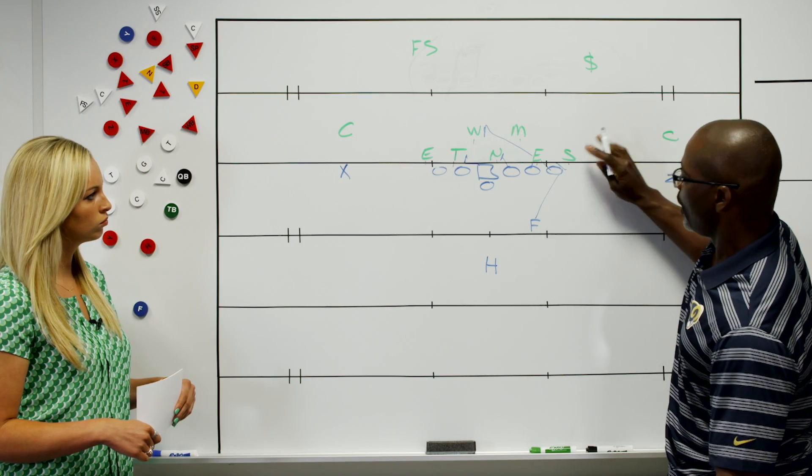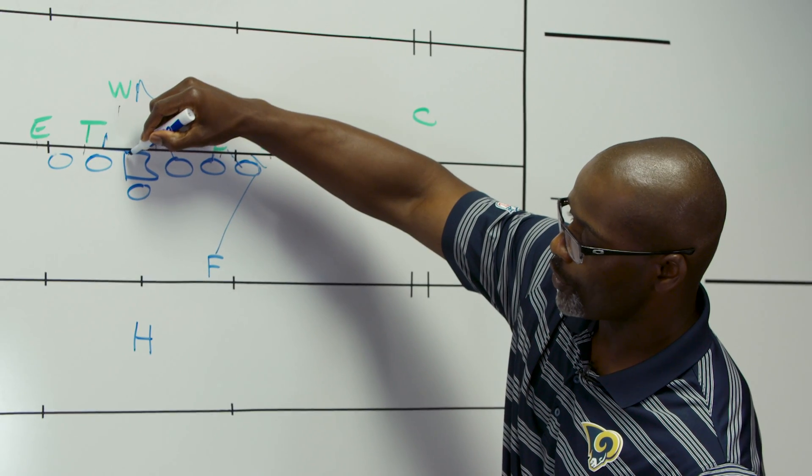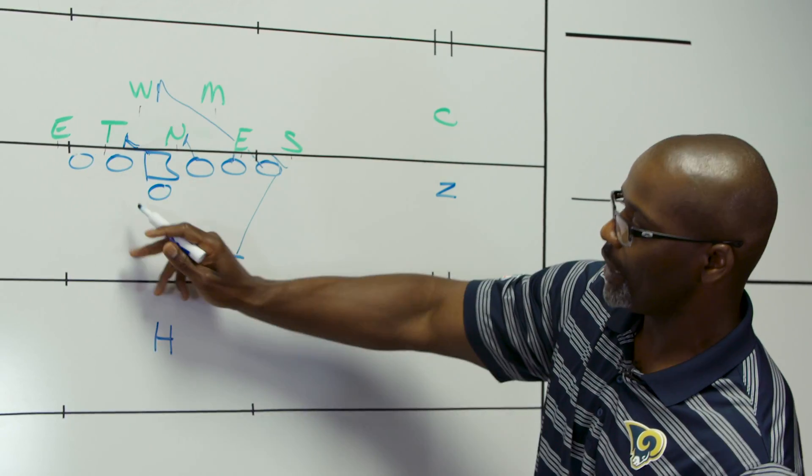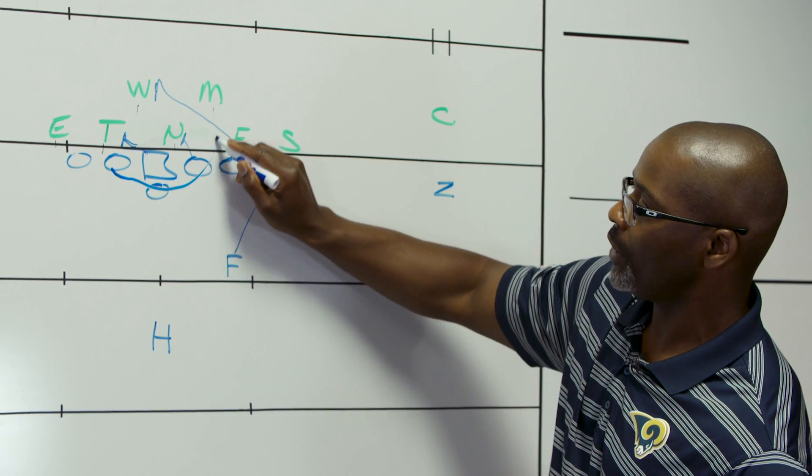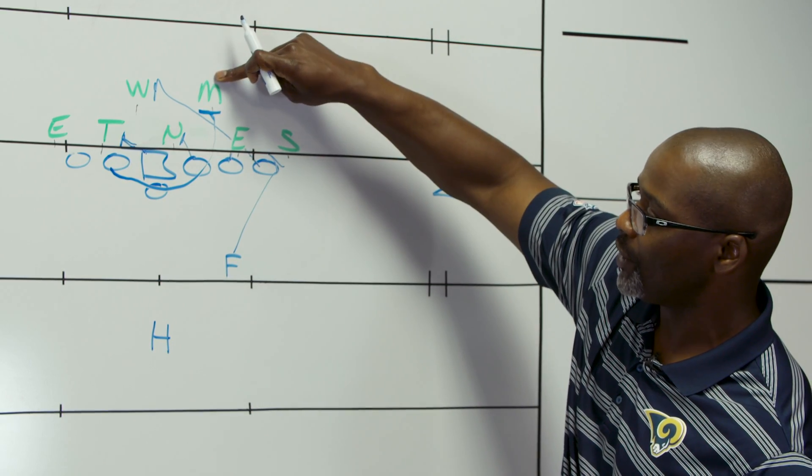The full back is responsible for the Sam. What we do backside here, and part of the reason why we have the center blocking back, is because we're going to take this backside guard and we're going to pull him around. And he's responsible for that front side bubble backer, in this case the Mike.